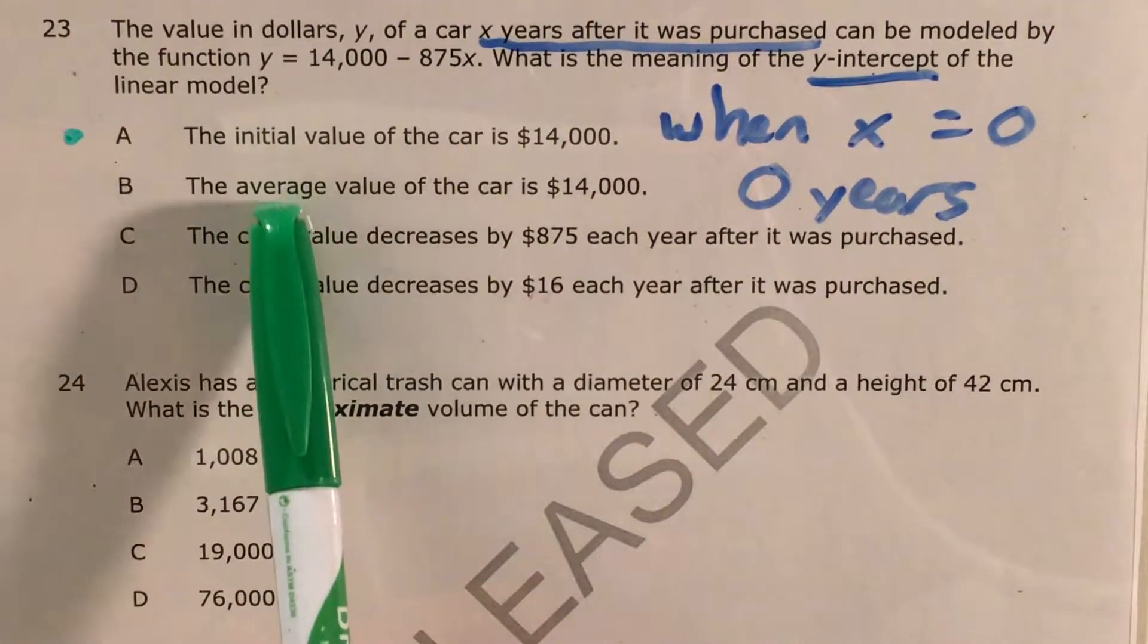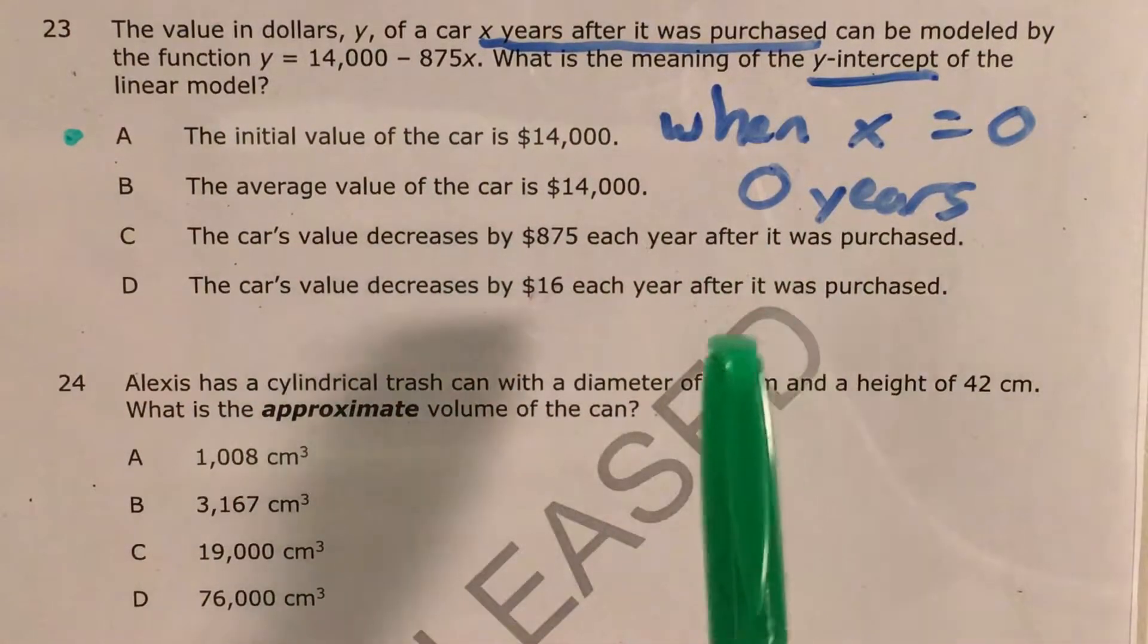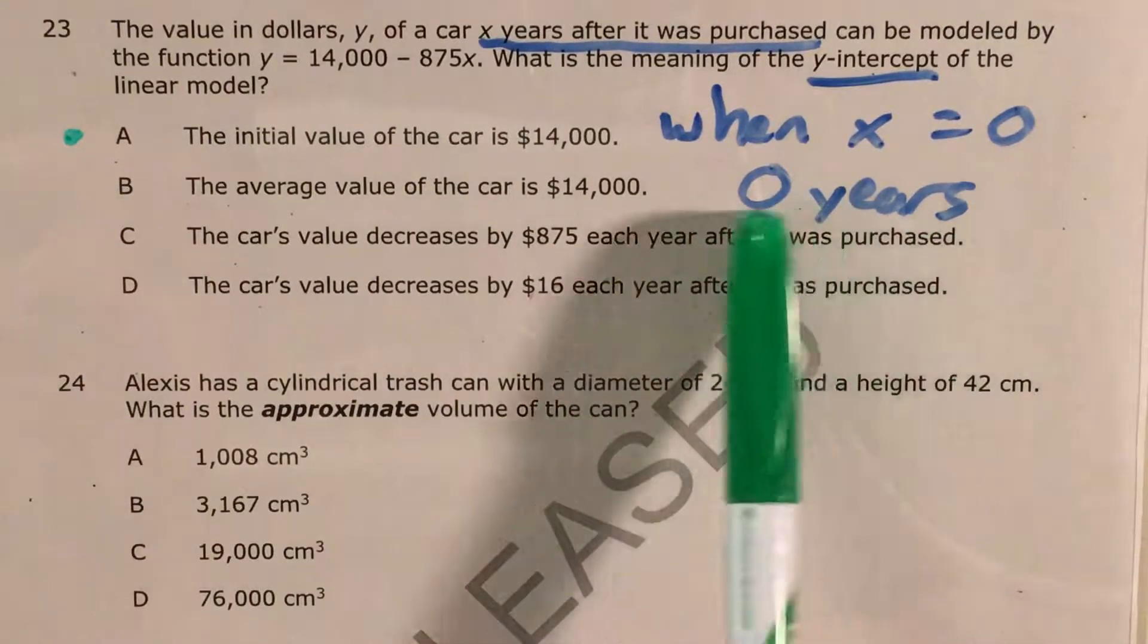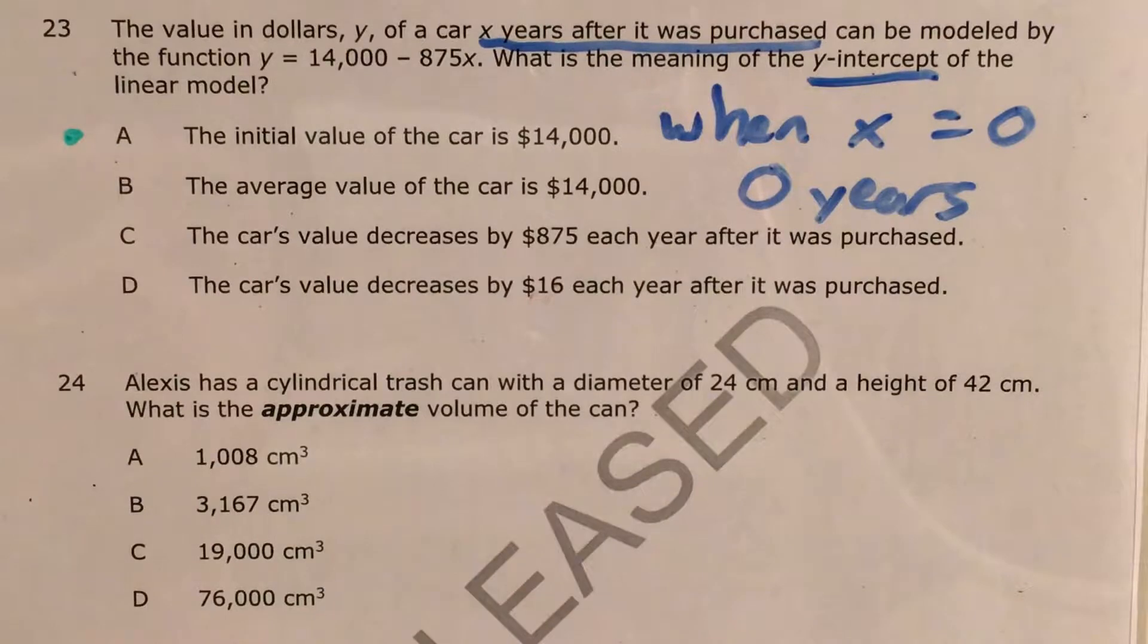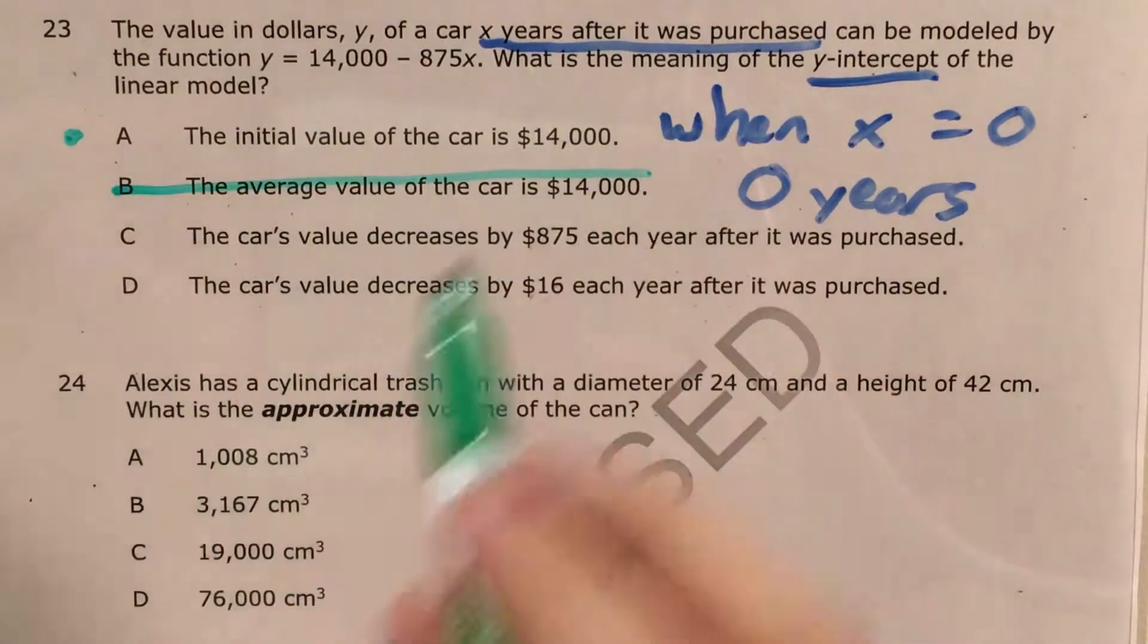But when it says average, average is like over a long period of time. Long period of time tells me that zero years can't go with that, and we know that we're looking for something that means zero years, so choice B is out.